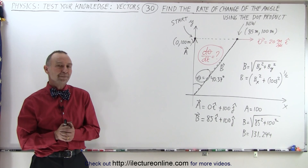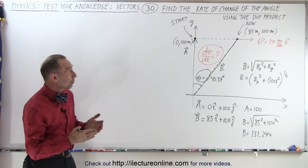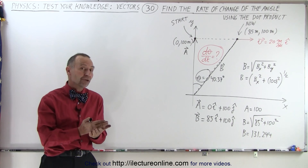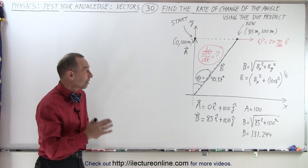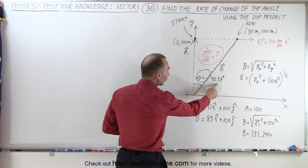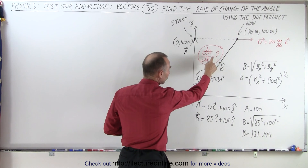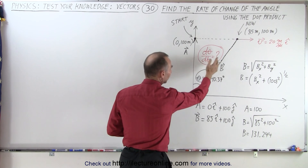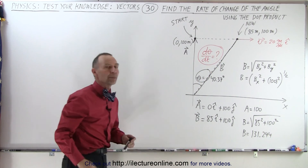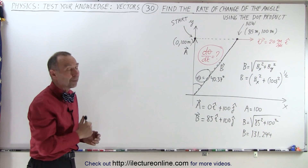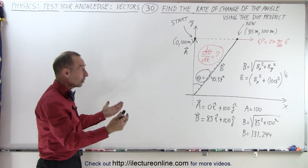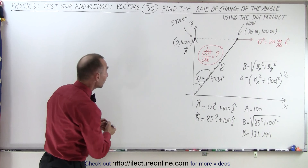Welcome to our lecture online. In this problem, we're going to take the same problems we did in the previous video, but instead of trying to find the angle, which we now know what it is, we're going to find the rate of change of the angle with respect to time at this particular moment in time, and we're supposed to do it by using the dot product. So let's start with the dot product.